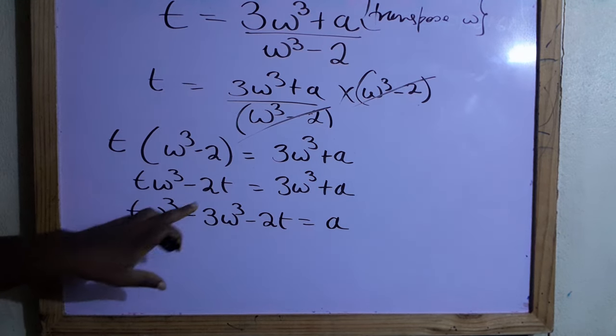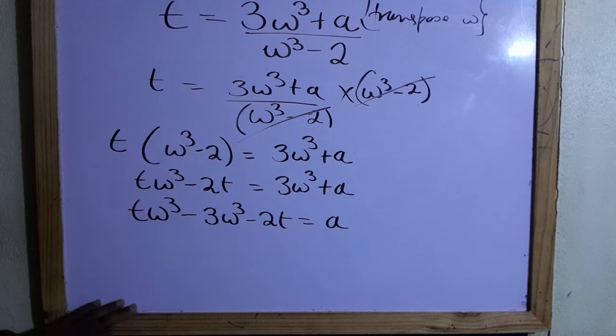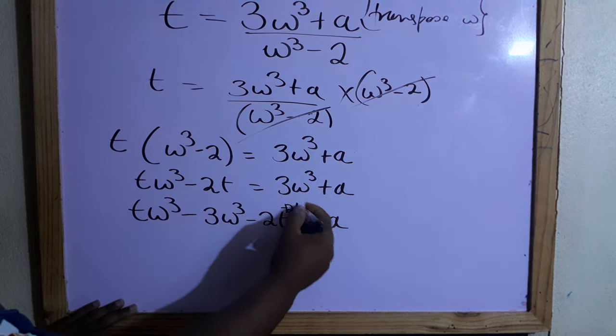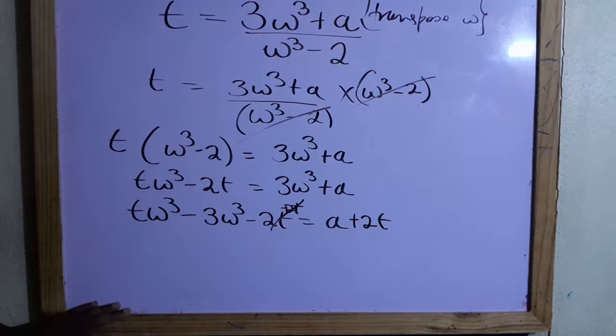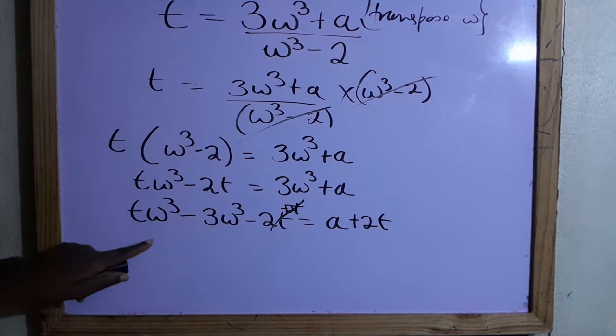We need to get rid of this minus 2ℓ by taking the opposite, which is plus 2ℓ. Next we can factorize out the ω³.